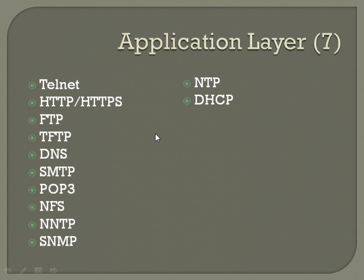So the application layer — here are a lot of examples: Telnet, HTTPS, HTTP, File Transfer Protocol, Trivial File Transfer Protocol, Domain Name Services, Simple Mail Transfer Protocol, POP3, email, NFS, NNTP, SNMP, NTP, DHCP. All these are application layer on a raw level.